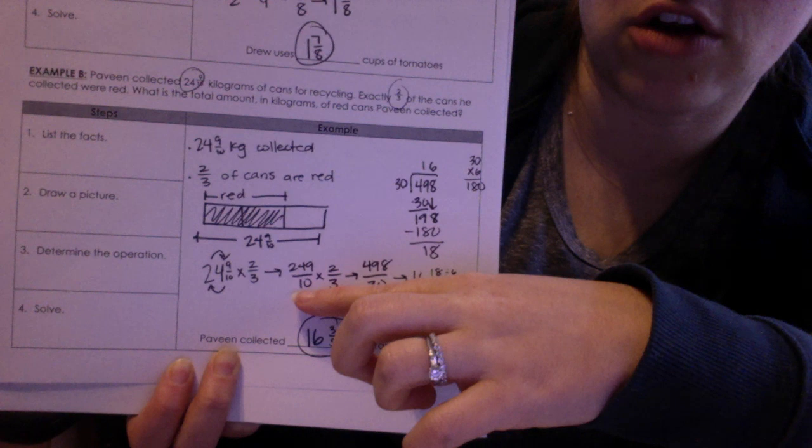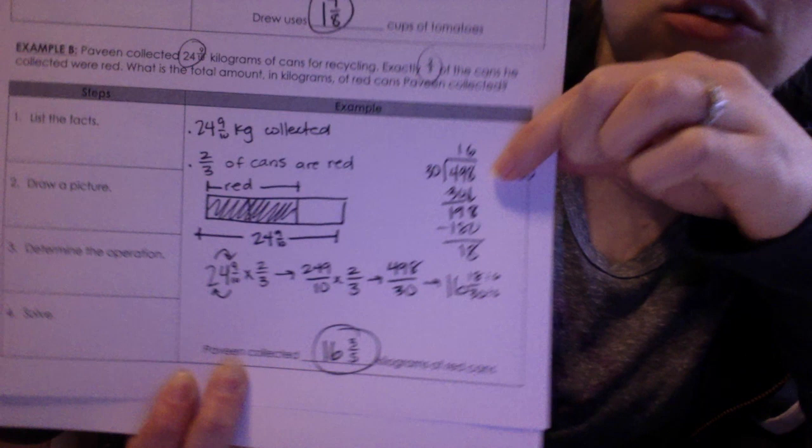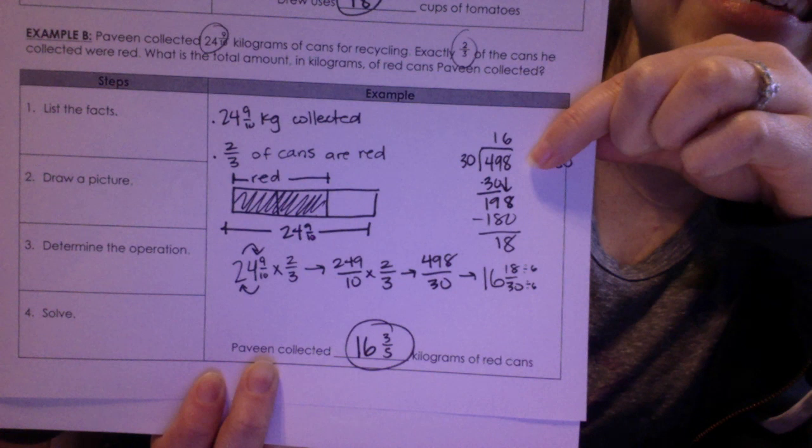249 times 2 is 498. And then 10 times 3 is 30. So 498 over 30. I actually did the division here so that I could work it out. And I got the 498 divided by 30 is 16, remainder 18. So with my remainder, I turned that into the numerator.